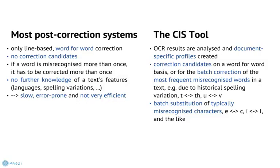The SIS tool, on the other hand, offers correction candidates and two different batch modes to correct several errors at once, thanks to the profiles mentioned above. They are document-specific and are based on the OCR result of the document and statistical language models, so they are created without any user input or training.